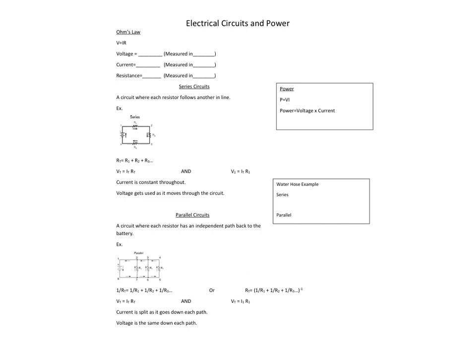Ohm's Law is very simple. It's V equals IR, where V is for voltage, measured in volts — symbol is V. The current is I, measured in amps — symbol is A. And then resistance, symbol is R, measured in what are called ohms, and its symbol is the Greek letter omega.